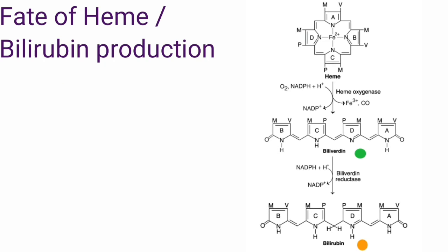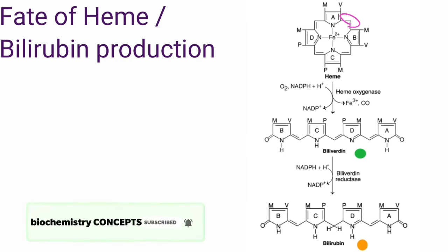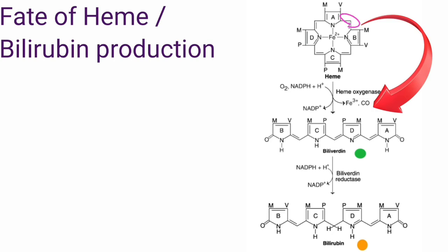Heme oxygenase utilizes NADPH and oxygen. Along with iron, carbon monoxide is also released in this reaction. Heme oxygenase catalyzes the cleavage of the alpha methene bridge linking pyrrole rings 1 and 2, and this alpha methene bridge is liberated as carbon monoxide. This biliverdin is further reduced to bilirubin, a red-yellow pigment, by an enzyme called biliverdin reductase.